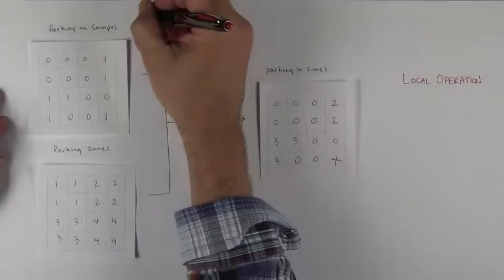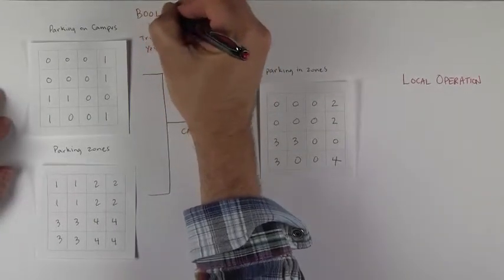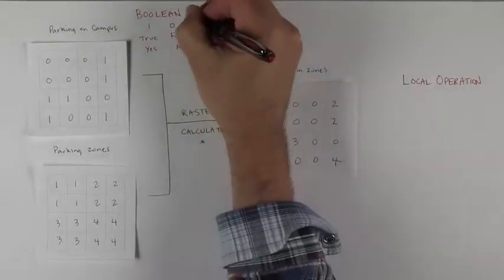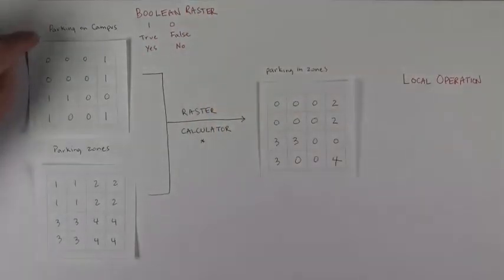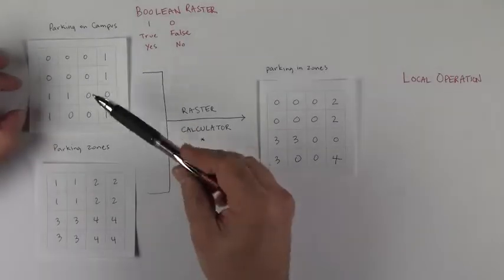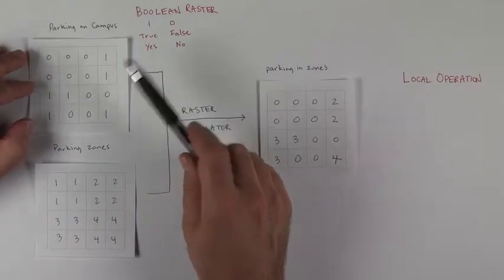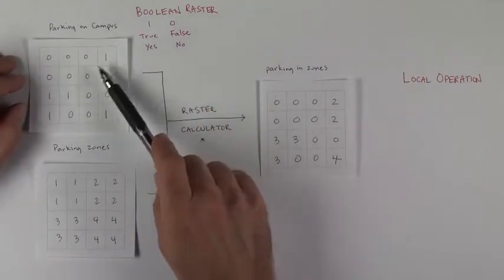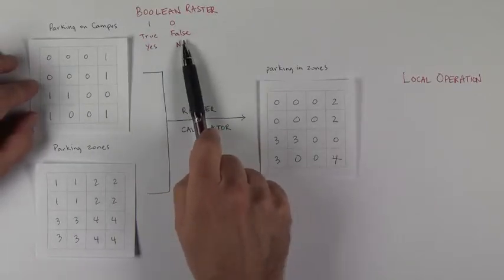And because of that, can you still see me up here? I'm going to refer to this as a Boolean raster. So again, it's the idea that parking on campus is an example of a class of rasters that I'm going to refer to as Boolean rasters because the numbers are kind of representing true or false or yes or no values.